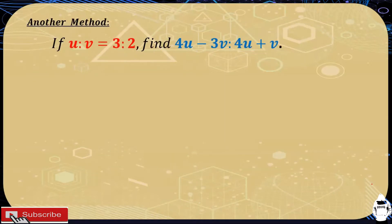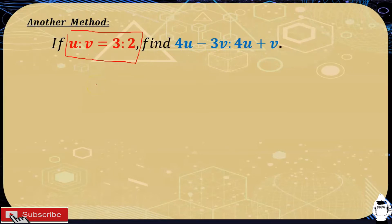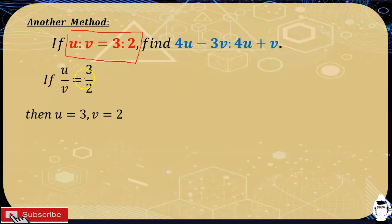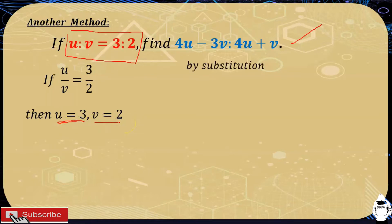I have another method to solve that same problem. Again, if u is to v is equal to 3 is to 2, find 4u minus 3v is to 4u plus v. We write it in fraction form. Since u over v equals 3 over 2, we can directly let u equal 3 and v equal 2. This method works when the proportion is given in this straightforward form.